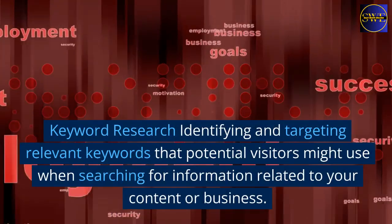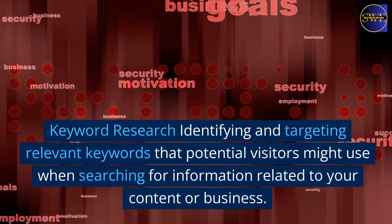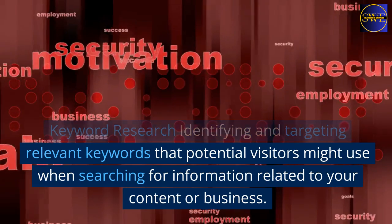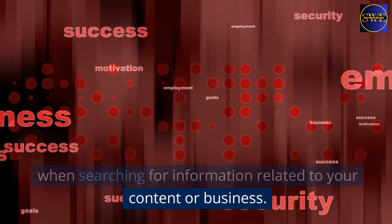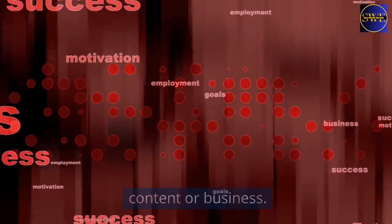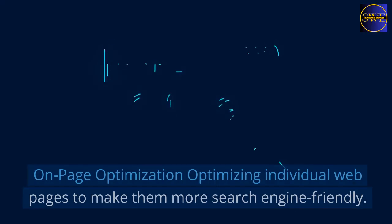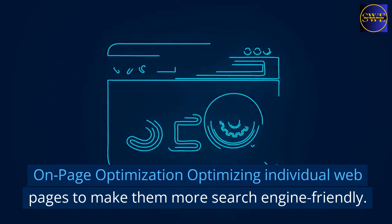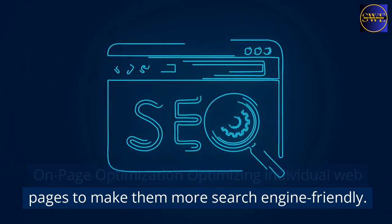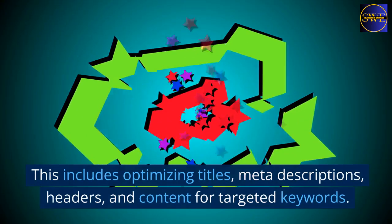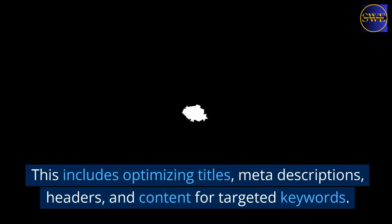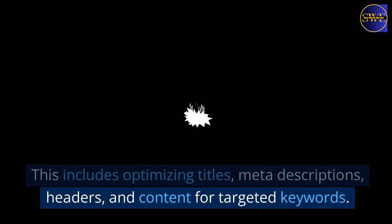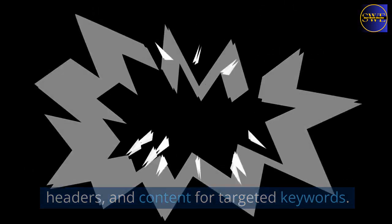Keyword research: identifying and targeting relevant keywords that potential visitors might use when searching for information related to your content or business. On-page optimization: optimizing individual web pages to make them more search engine friendly. This includes optimizing titles, meta descriptions, headers, and content for targeted keywords.